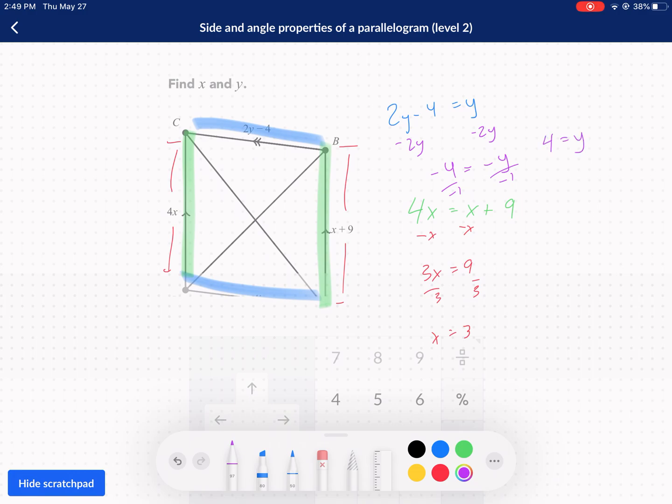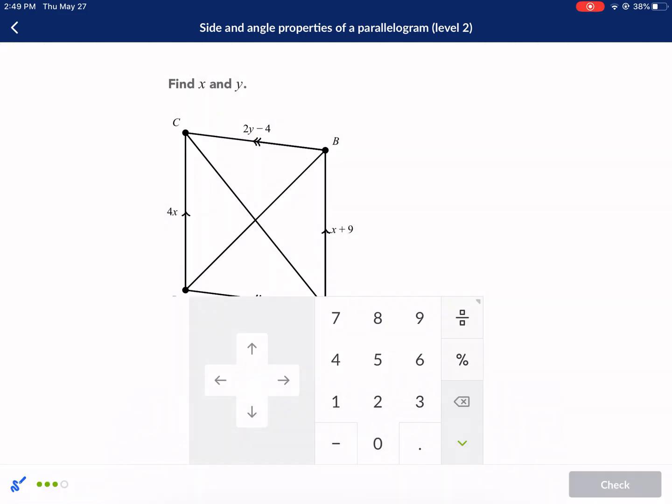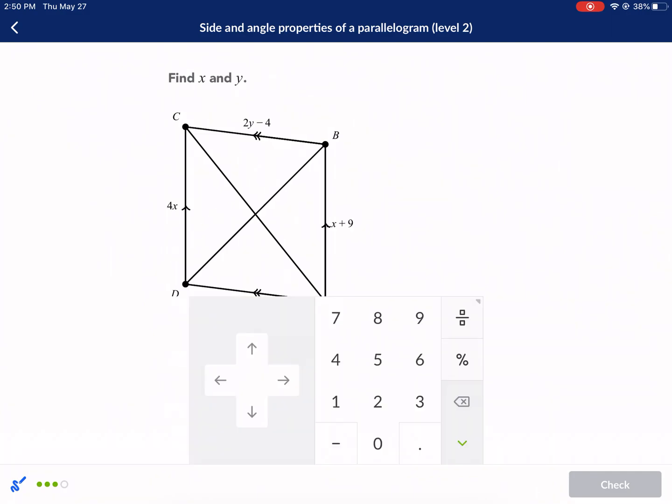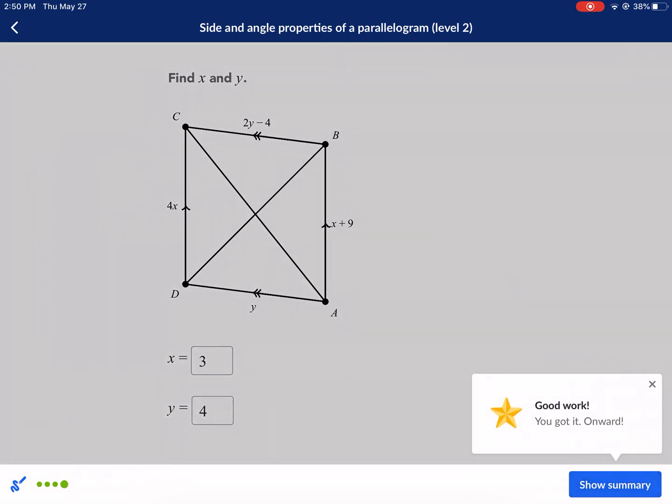We can divide by negative 1 or multiply by negative 1, whatever you want. We have 4 equals y. Now let's plug that in just to make sure. So we have 2y minus 4. So that'd be 8 minus 4. That would be a side length of 4. And then the bottom one, it got cut off. And that'd also be 4 because y equals 4. So we have our answer here. We're good to go. 3 and 4. And that is all. Level 2 is complete.